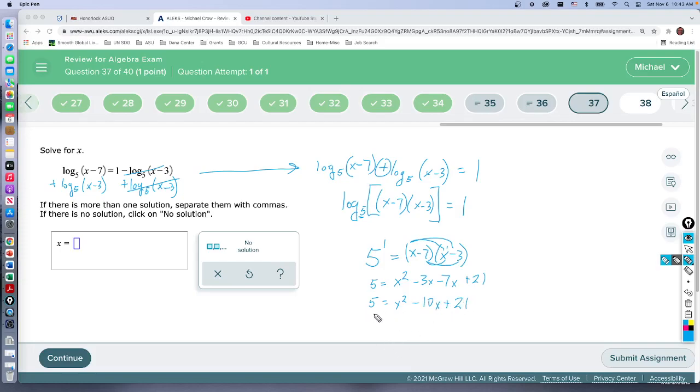And then to solve this, well because it's quadratic we set it equal to 0. So we're going to subtract 5 from both sides. That's going to give us, let's change colors, that's going to give us 0 equals x squared minus 10x, 21 minus 5 is, what's that going to give us? 16, plus 16.